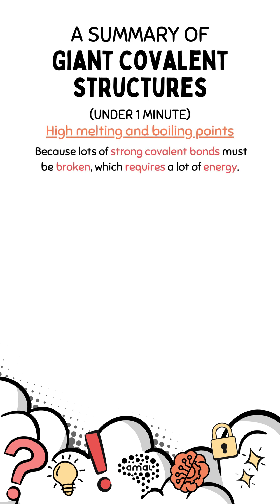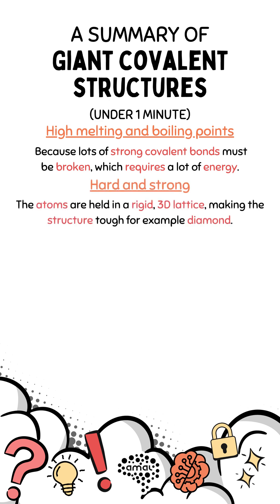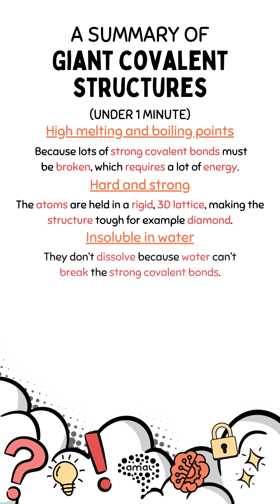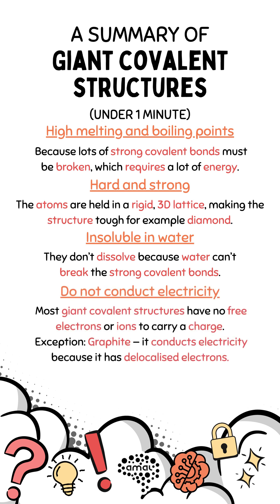Giant covalent structures are hard and strong because the atoms are held in a rigid 3D lattice, making the structure tough — for example, diamond. They are also insoluble in water because water cannot break the strong covalent bonds.